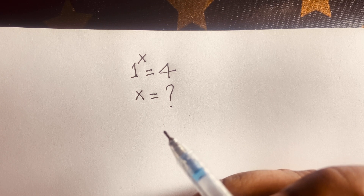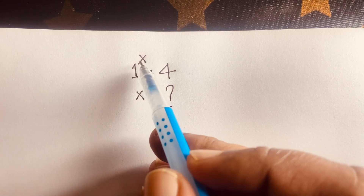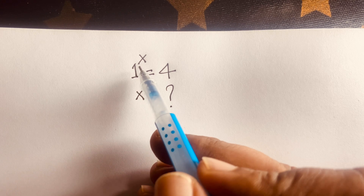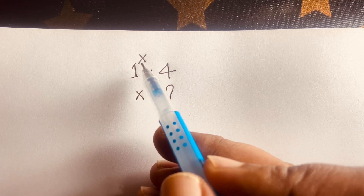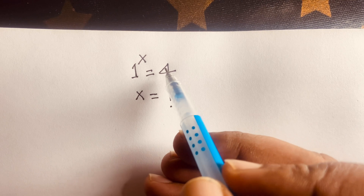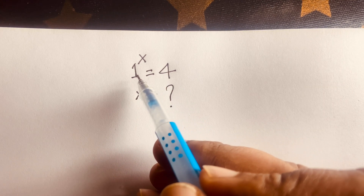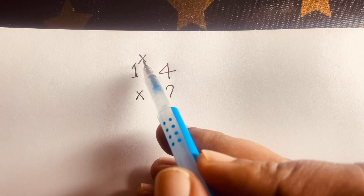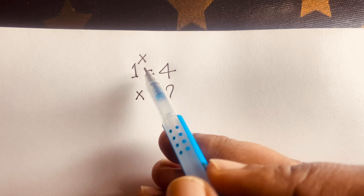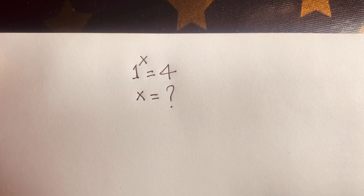So how to solve this question? It is an interesting math because 1 to the power x is equal to 4. If you think x is 1, so 1 to the power 1 will be 1, and 1 is not equal to 4. Or if x is equal to 100, so 1 to the power 100 will be 1, and 1 is not equal to 4. So how to solve this question?